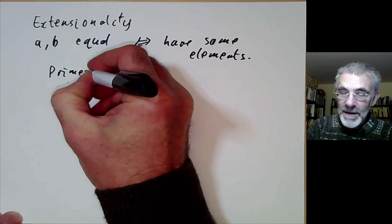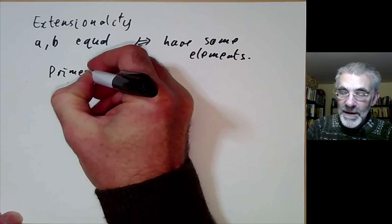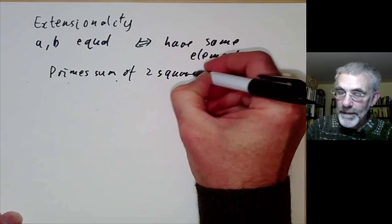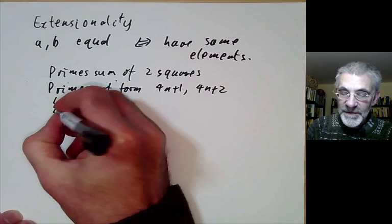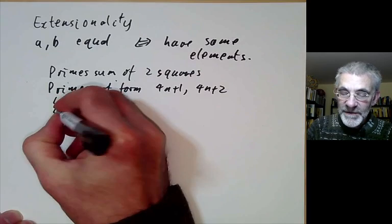First of all, I could have the set of primes as the sum of two squares. Or I could define a set to be the primes of the form 4n+1 or 4n+2. Or I could define it to be the set of primes 2, 5, 13, 17 and so on.